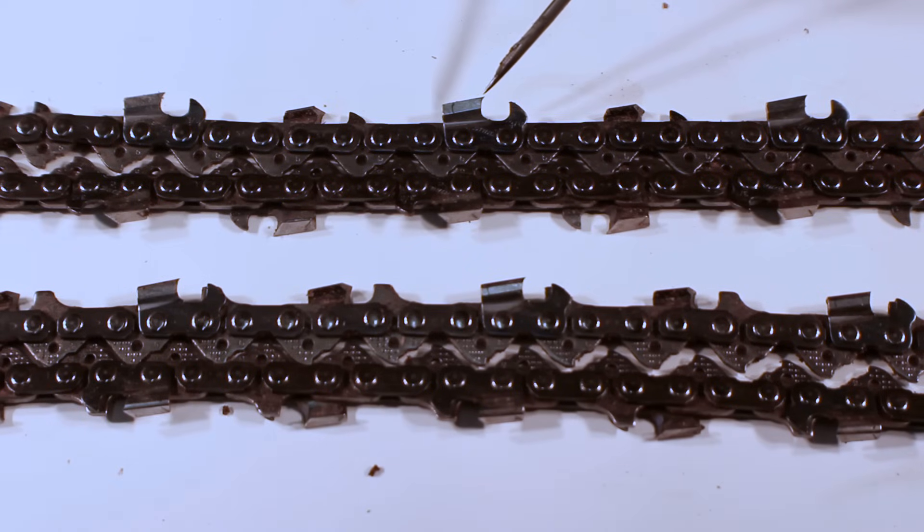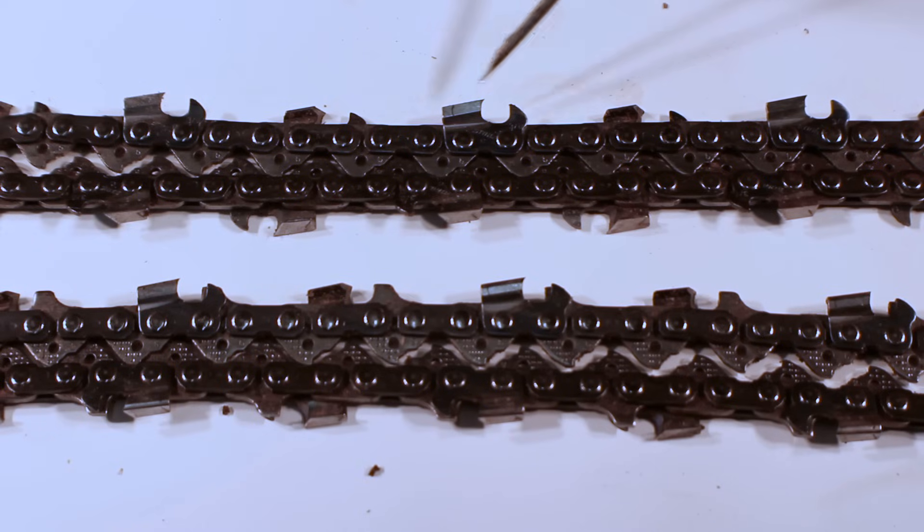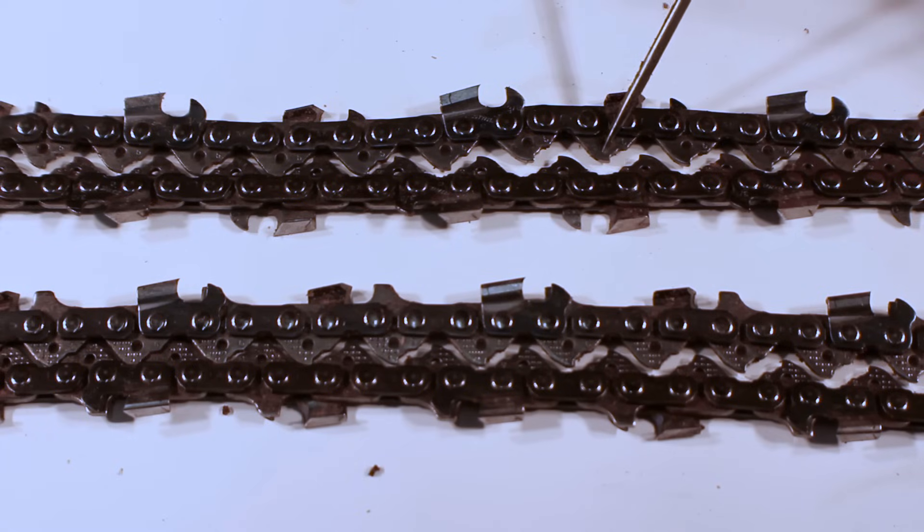This is the cutter - that's what actually does the cutting. The top of it is the top plate. Right here is the depth gauge, which determines how much wood is cut away. The cutters are angled back, so as you file and sharpen it, it gets shorter and shorter. So occasionally you do need to take down the depth gauge. In between the cutters this link is called a tie strap. Underneath is the drivelink.